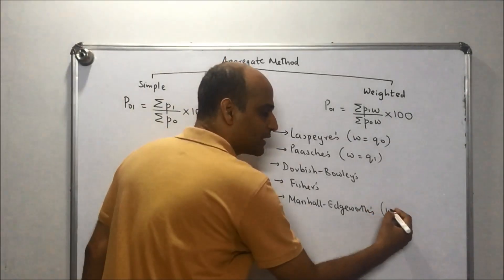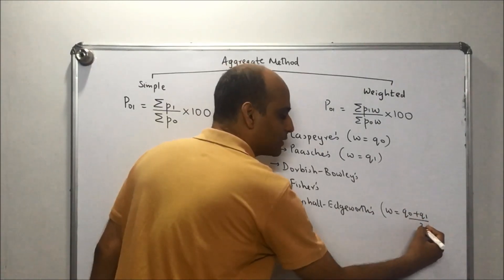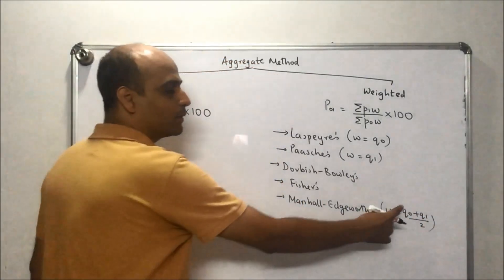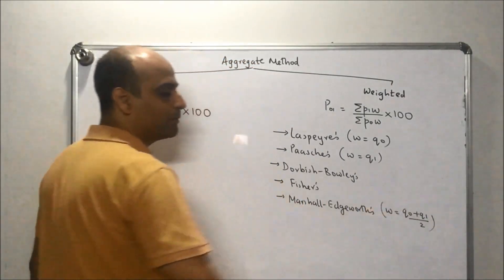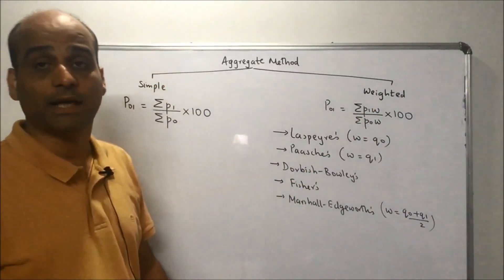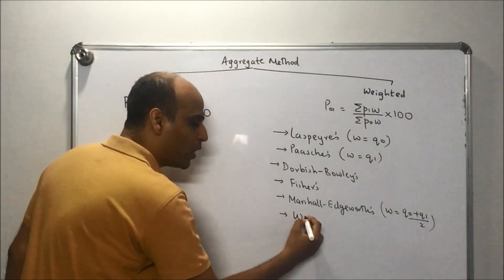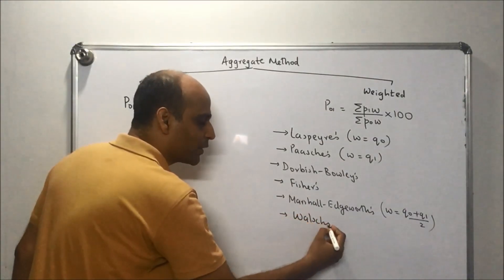Next is Marshall-Edgeworth's index. In this case, weightage is given to the average of Q₀ and Q₁. So W equals Q₀ plus Q₁ by 2. If we substitute it here, you'll get the formula for Marshall-Edgeworth's index.